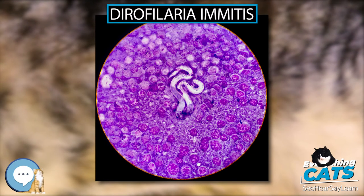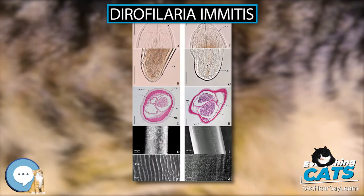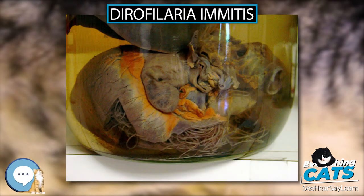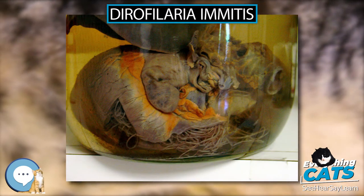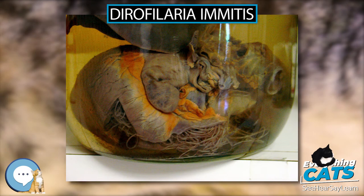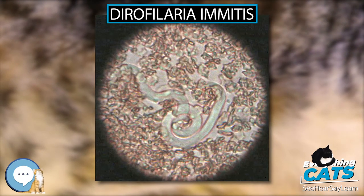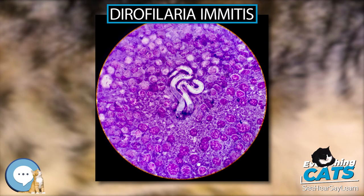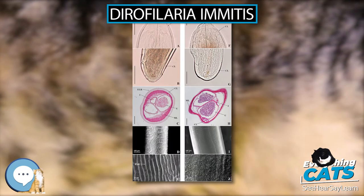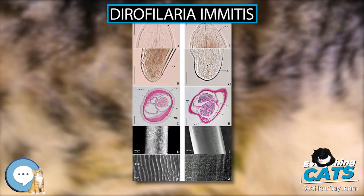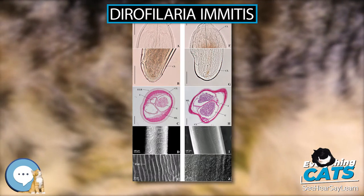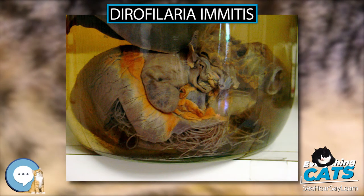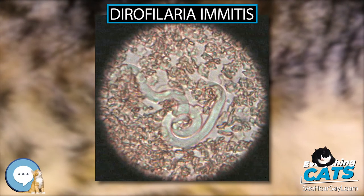After a week or two of further growth, they molt into the fourth larval stage (L4). Then they migrate to the muscles of the chest and abdomen, and 45 to 60 days after infection, molt to the fifth stage (L5) immature adult. Between 75 and 120 days after infection, these immature heartworms enter the bloodstream and are carried through the heart to reside in the pulmonary artery. Over the next three to four months they increase greatly in size. The female adult worm is about 30 centimeters in length, and the male about 23 centimeters, with a coiled tail.